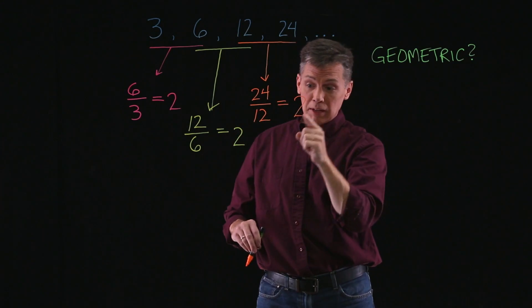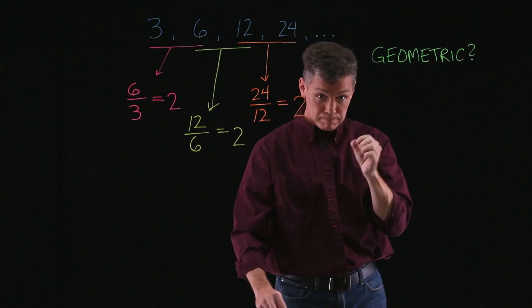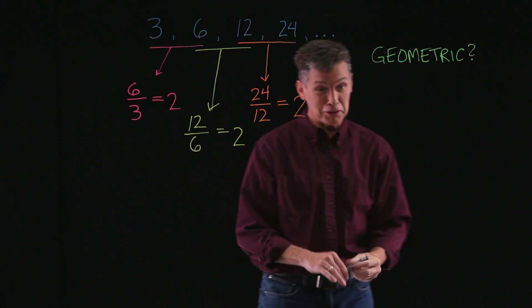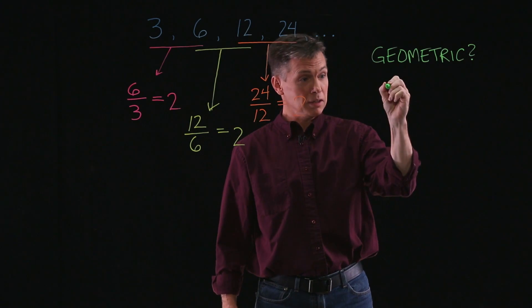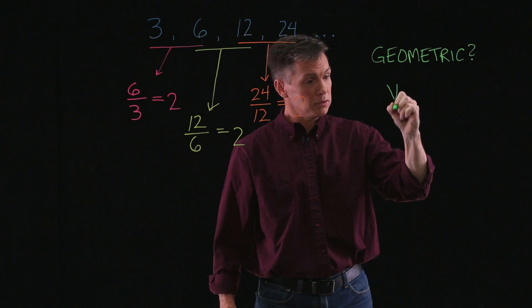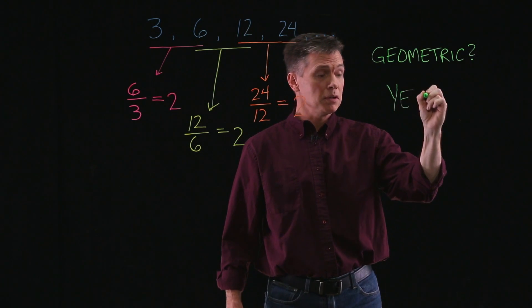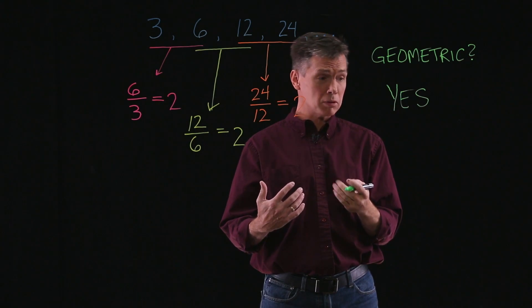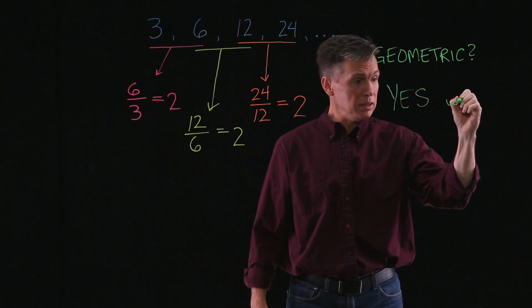The fact that we got the same number for each division means that this sequence is geometric. Let's get an answer on this guy. Geometric? Yes. The second half of the question also said, if it's geometric, what is the common ratio?